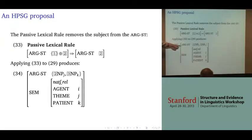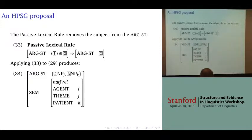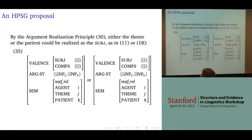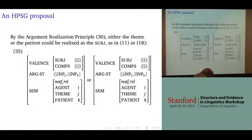two arguments that aren't ordered with respect to each other, then either of them could be realized as the subject of the passive construction. So we could get either the theme or the patient being promoted to subject through the passive construction.